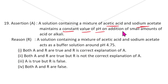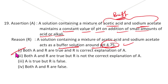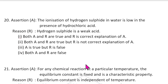Nineteenth question: A solution containing a mixture of acetic acid and sodium acetate maintains a constant pH on addition of small amounts of acid or alkali — this is a buffer solution. The mixture of acetic acid and sodium acetate acts as a buffer solution around pH 4.75. Both statements are correct. The answer is the first option.